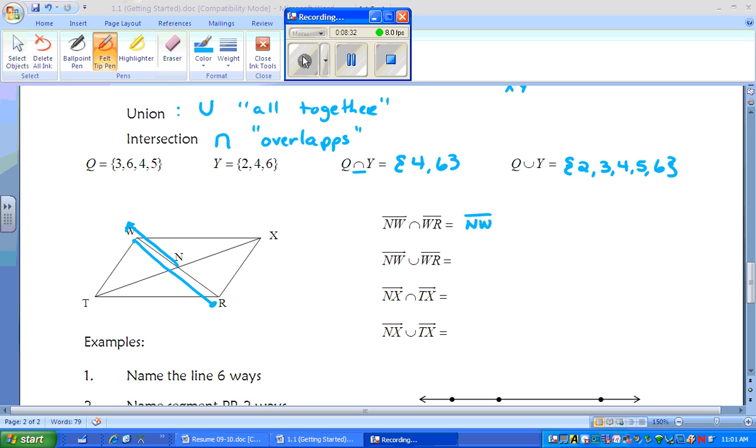The next example has the same two things highlighted, but it's the union which is all together. So all together, it's starting at R and it's continuing all the way through W and beyond. So you would have just created ray RW.